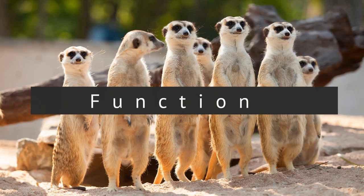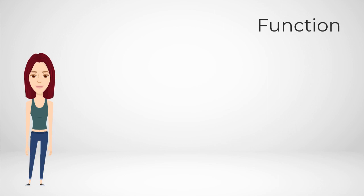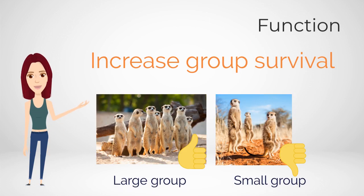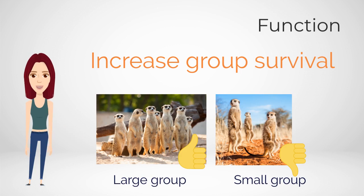Function, also known as adaptive value, describes how a behaviour relates to the animal's life and reproductive success. It was originally referred to as survival by Tinbergen when he explained behaviour as having evolved as a means of survival. The role of sentinel behaviour is shown to increase survival within groups as some meerkats look out for danger while others forage for food. Larger groups tend to be more advantageous as the work can be divided amongst individuals.